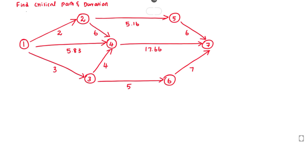Hello friends, welcome to Civil Engineering Exam. Today we are going to see a problem related to the Critical Path Method. The problem is to find the critical path and duration. The network has 7 activities and 5 paths.